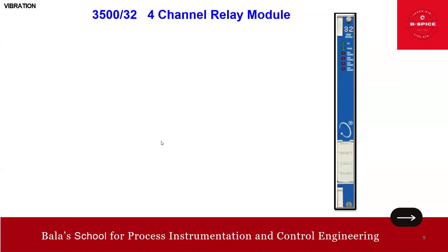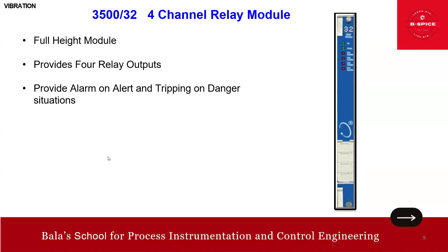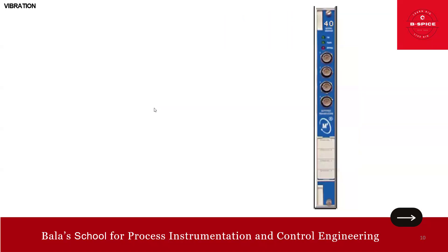Module 32 is the channel relay module. It is a full-height module providing four relay outputs. It provides alarms on alert and tripping on danger situations, and is programmable for AND/OR voting of trip release.